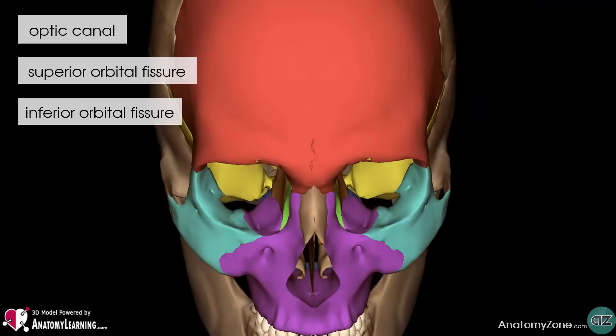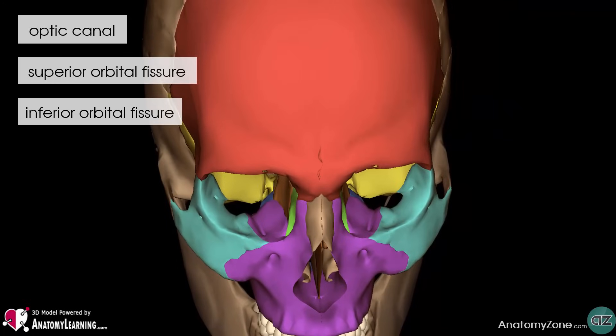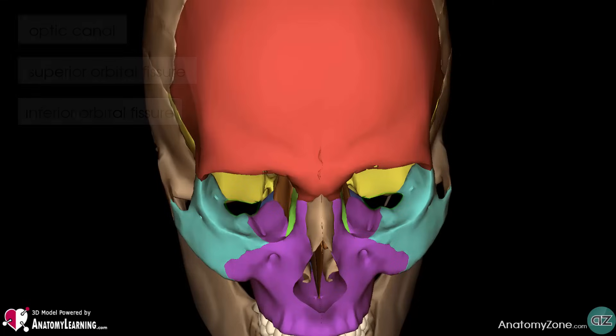The inferior orbital fissure separates the lateral wall of the orbit from the floor of the orbit. This fissure transmits the zygomatic branch of the maxillary nerve, which is the second branch of the trigeminal nerve, cranial nerve 5, as well as the maxillary nerve itself. In addition, it transmits the inferior ophthalmic vein and also some sympathetic nerves.